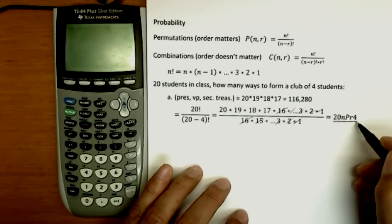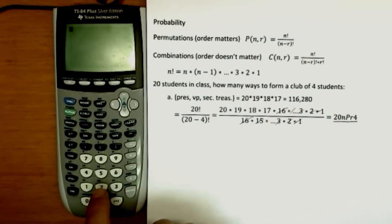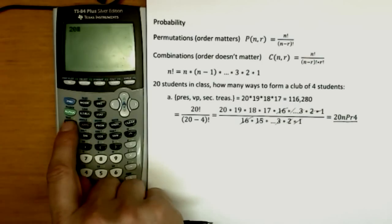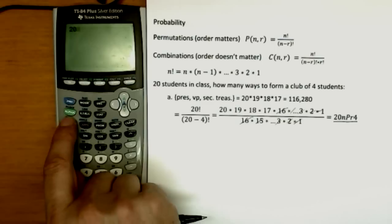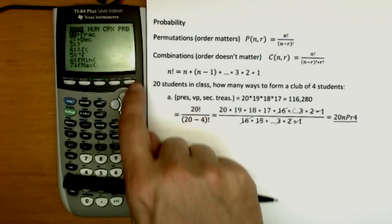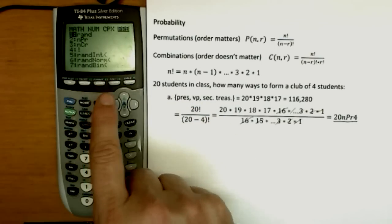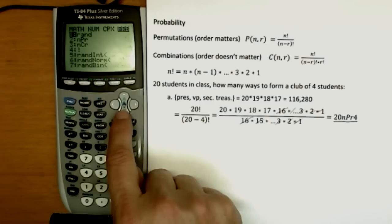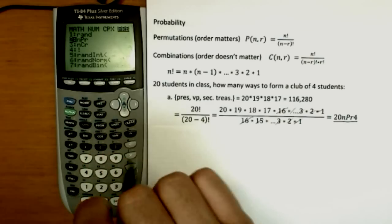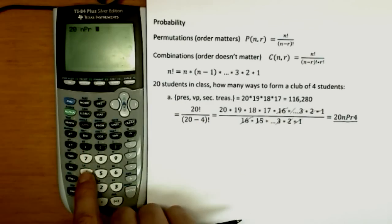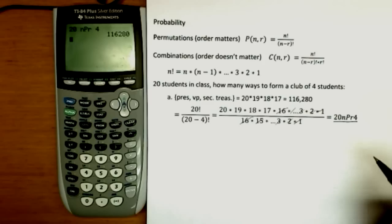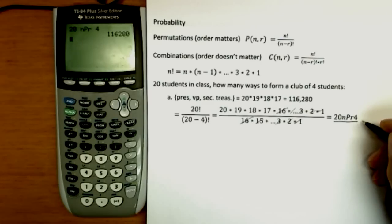This is how it's going to look on our calculator. To demonstrate that calculation, we have to type the 20 first. Then I select math. Math key on the calculator. And I move over to PRB for probability. And we want permutations. That's NPR, the second one in the list. And 20 choose four. We get the same answer. So this is actually how we're going to calculate. How to do it on the calculator.